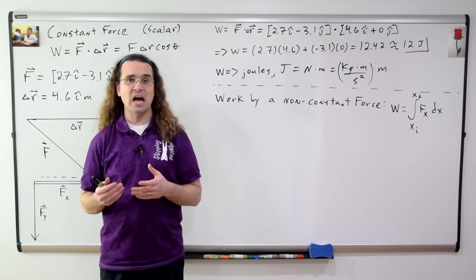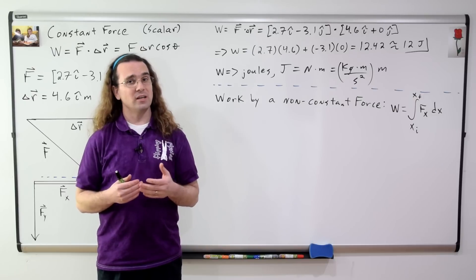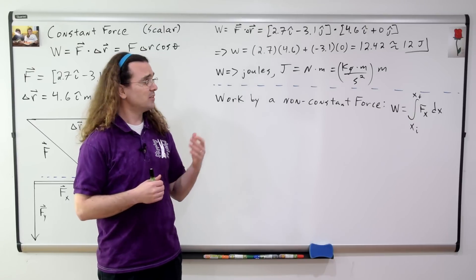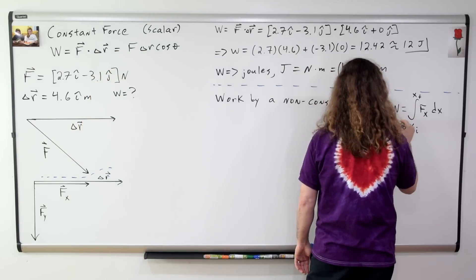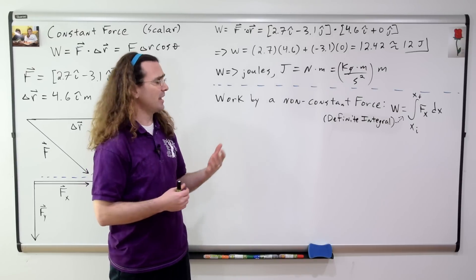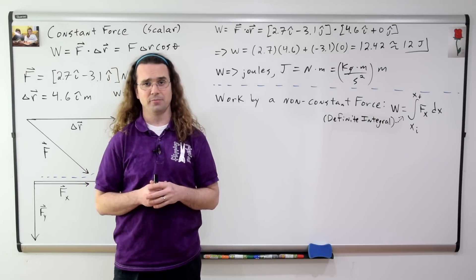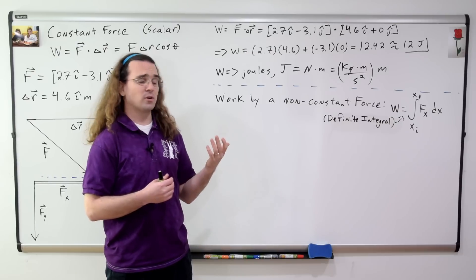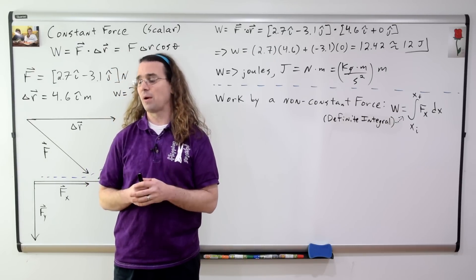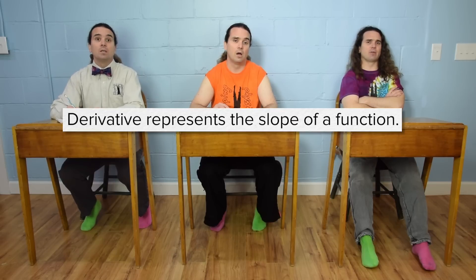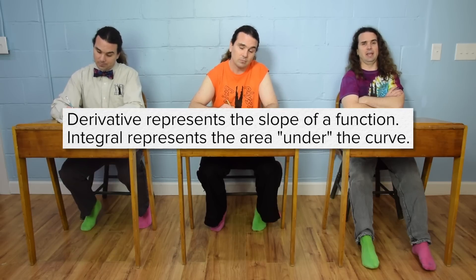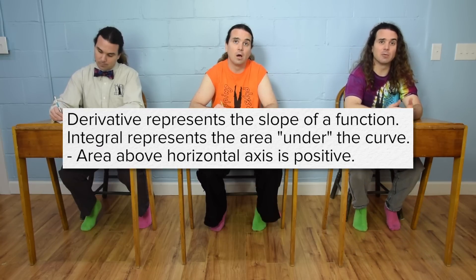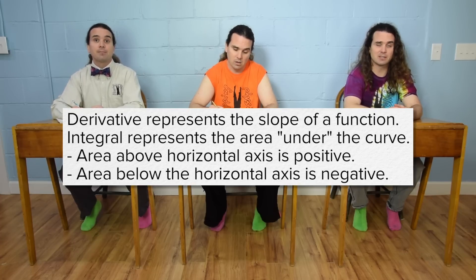The work done by a force which is not constant uses a different equation. That work is equal to the integral from position initial to position final of the force with respect to position, and this is called a definite integral, which simply means the integral has limits — in this case from initial to final position. The integral, or anti-derivative, represents the area under the curve, meaning the area between the curve and the horizontal axis. Area above the horizontal axis is positive; area below is negative.